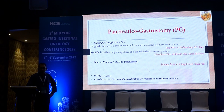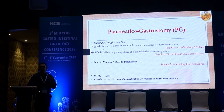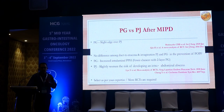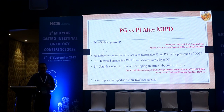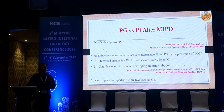Minimally invasive pancreaticogastrostomy (MI-PG) is also feasible. Consistent practice and standardization of the technique are essential to improve results and outcomes. Comparing PJ versus PG, PG has a slight edge in randomized control trials published in 2016 and 2020. However, the Cochrane database meta-analysis and a meta-analysis of RCTs published in June 2018 showed no difference among duct-to-mucosa, invagination PJ, and PG in prevention of POPF. PG leads to increased intraluminal PPH while PG has slightly increased incidence of intra-abdominal abscess. Technique selection should be based on your expertise, and more RCTs are required.